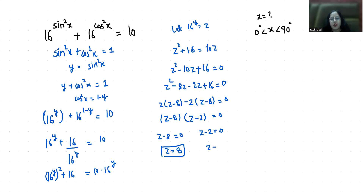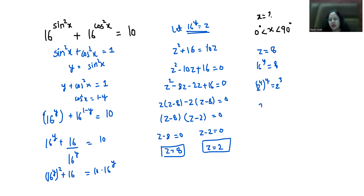Recalling that z equals 16^y, for z equals 8 we have 16^y equals 8. Writing 16 as 2^4 and 8 as 2^3, we get 2^(4y) equals 2^3. Comparing both sides, 4y equals 3, and dividing both sides by 4 gives y equals 3/4.